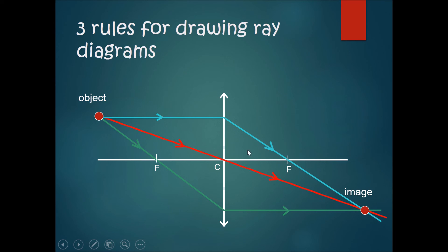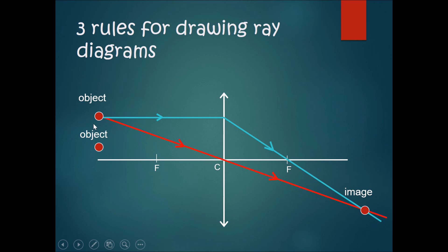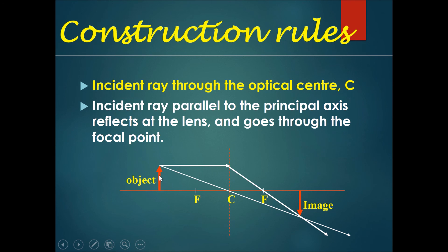Some of you may ask: can we just use two lines? Yes — using just rule one and rule two will give you the same image position. The third line is mainly for checking. If the object is at a different position, lower for example, you do the same thing: draw the basic line through the center, draw the parallel line, then the line through the focal point, and where they cross is your image. Use the tip of the arrow, and draw the arrow back down to the baseline — you'll notice the image is flipped.